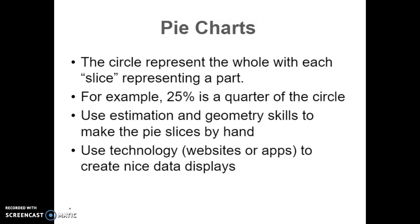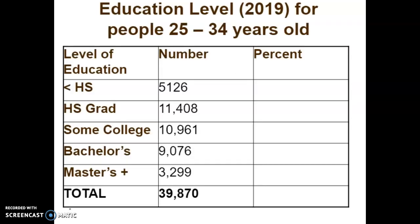We're going to be using technology, like I said. So today's assignment is really just about being able to read pie charts. You're going to have a Google form to do this. I wanted to work through an example with you and show you two pie charts I created from the exact same data, using two different websites I found. So I've got frequency counts — quite a few people. There were 39,870 twenty-five to thirty-four year olds who were asked their level of education, and the middle column represents the number of people who had each level.